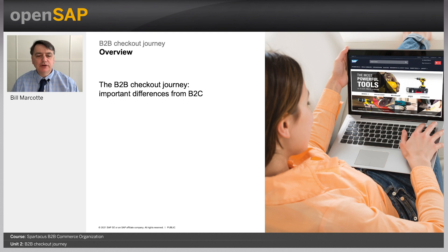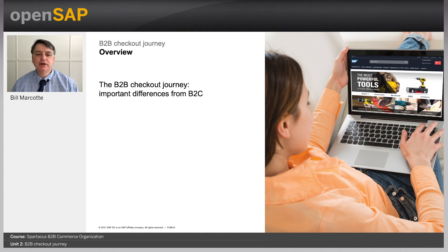Welcome back — this is Unit 2 of the B2B Commerce Organization Spartacus course. This short unit is about describing the checkout journey seen by a buyer who's part of an organization — in this case, the famous Mark Rivers. Some differences between a standard B2C checkout versus B2B: in B2C you specify a shipping address, a payment method (usually credit card, PayPal, or Apple Pay), review the details, and submit your order.